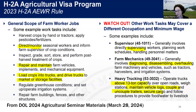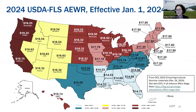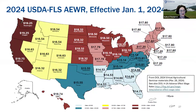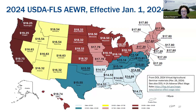For the adverse effect wage rate for 2024, published in the Federal Register and effective January 1st, rates are much higher than the federal minimum wage of $7.25. The lowest rate is $14.53 in Arkansas, Louisiana, and Mississippi. The highest rates are on the West Coast: $19.75 in California and $19.25 in Oregon and Washington. Here in Pennsylvania and the Mid-Atlantic States, we're at $17.20 along with Maryland, Delaware, and New Jersey, raising to $17.80 in New York and farther north.